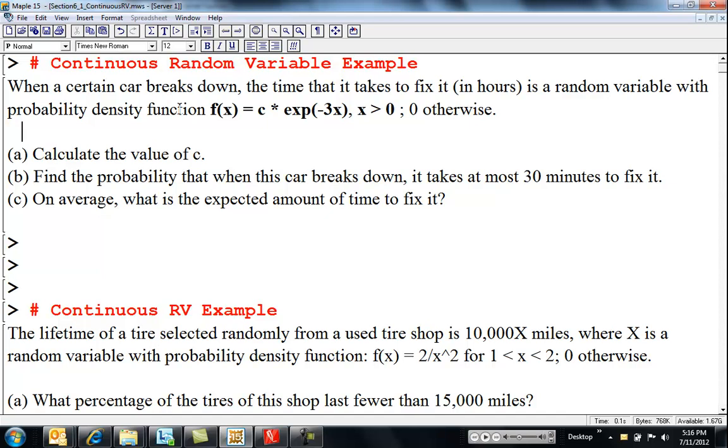So a certain car breaks down the time that it takes to fix it, in hours is a random variable. We should say random variable x with probability density function f of x equals c e to the negative three x, x greater than zero; zero otherwise. So everywhere else, not on this interval, the probability is zero. So for negative values, it's zero.